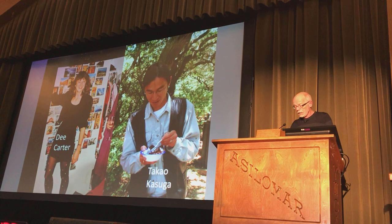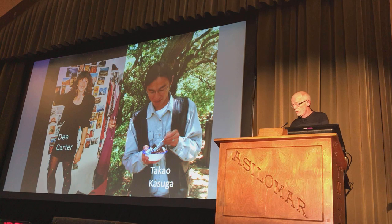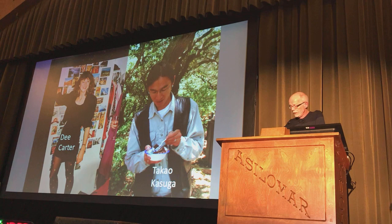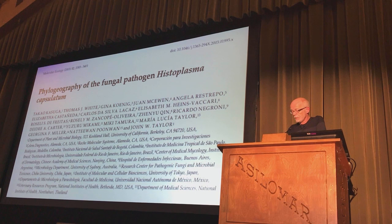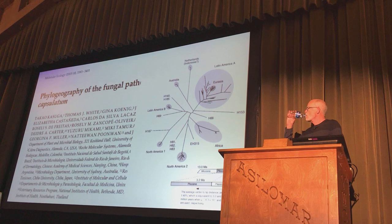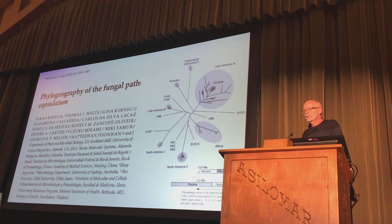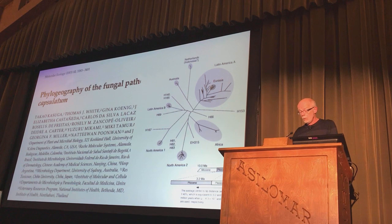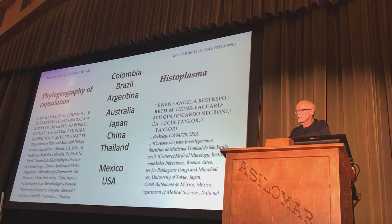At the same time, Dee Carter and Takao Kasuga were postdocs. Dee had come from New Zealand by way of France, and Takao from Japan by way of Scotland and Oklahoma. They worked on Histoplasma, and it proved to have a much more complicated structure than Coccidioides. What was interesting about this study was that with Neurospora we could get strains from David Perkins or the Fungal Genetic Stock Center, with Coccidioides from John Galgiani, but to get Histoplasma strains we had to contact people from all over the world. That led to relationships that endure to this day.